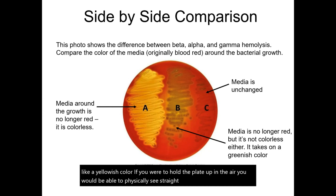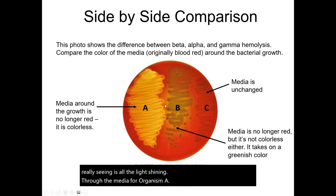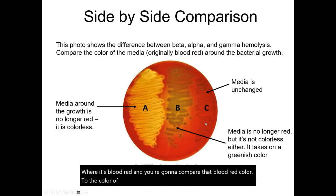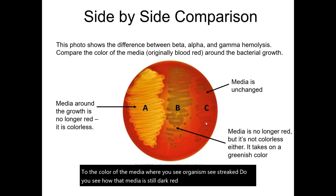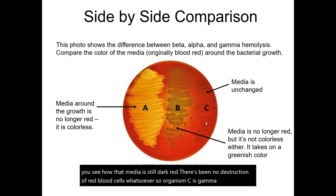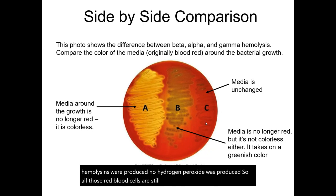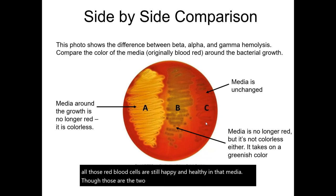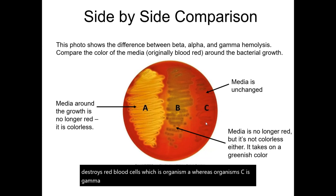This plate was placed on a light box, so you can see light shining through the media for organism A. Organism B in the middle shows alpha hemolysis, which turns the media a yellowish-green color — it's not clear, but it's not blood red either. It's somewhere in between, because hydrogen peroxide partially destroys the red blood cells. Beta hemolytic organism A completely destroys red blood cells, while gamma hemolytic organism C shows no destruction at all.